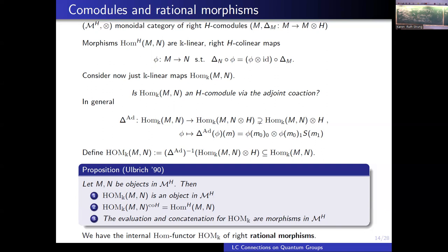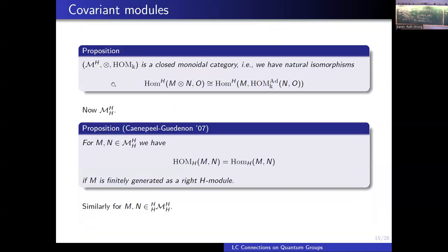These are linear maps — nothing more than linear maps — and they behave very well. They make this a closed monoidal category. Moreover, with this tensor product and these rational morphisms, we have a closed monoidal category. Furthermore, if instead of just an H-comodule I have an H-comodule that is also an H-module, then I can take morphisms that are both rational and right H-linear — and this is nothing else than the usual right H-linear morphisms.